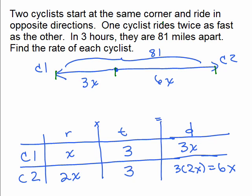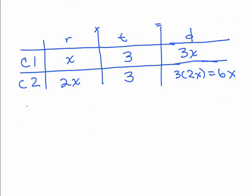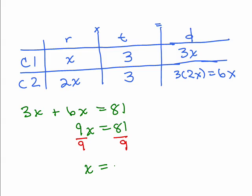We go down here. 3x plus 6x equals 81. 9x is 81. Divide both sides by 9. So x is 9.